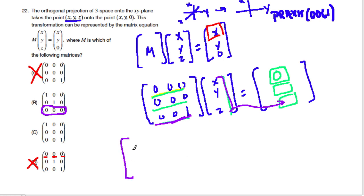But let's just try that. So we have 1, 0, 0, 0, 1, 0, 0, 0, 0, times x, y, z. And let's see what this gets us.